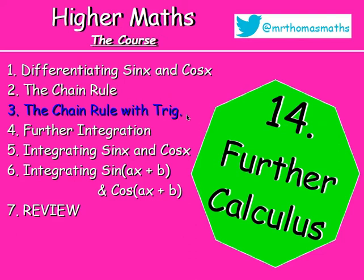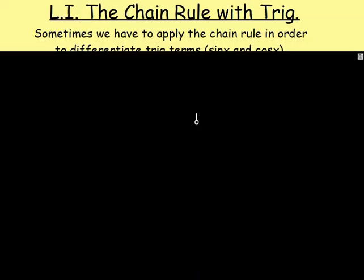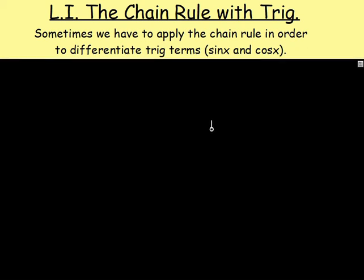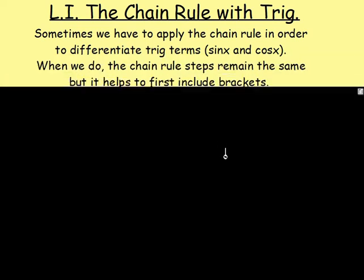What we've been doing in the first couple of lessons in this chapter is differentiating our trig terms — sine x and cos x — and we've also looked at the chain rule as well, using that to differentiate. What we're going to do now is put them both together.